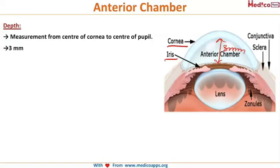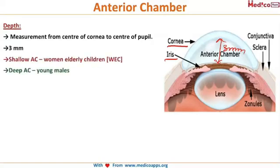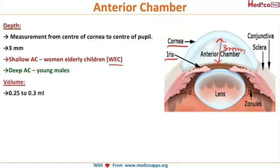The anterior chamber is usually shallow in women, elderly, and children — WEC, that's your mnemonic. These groups have a shallow anterior chamber, while young males have a deep anterior chamber.